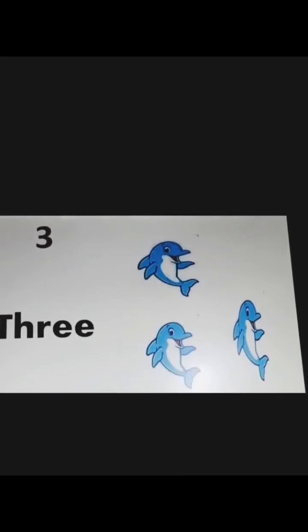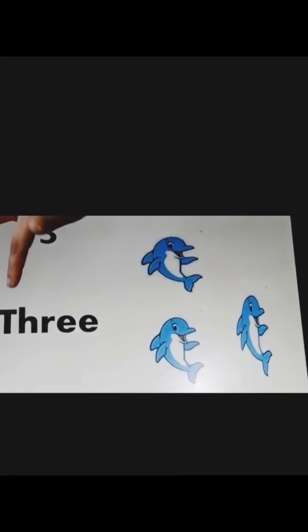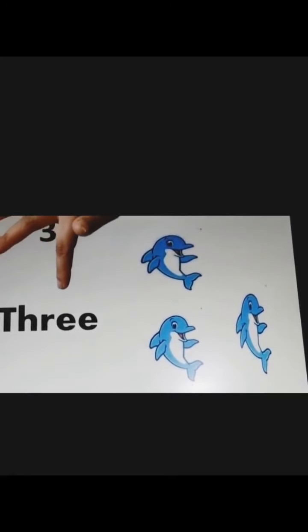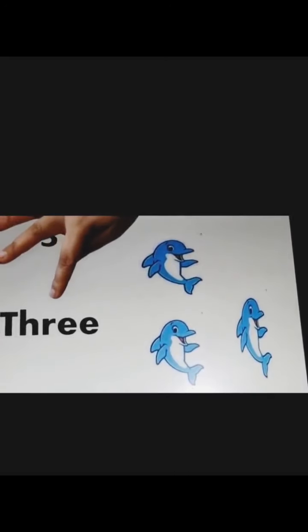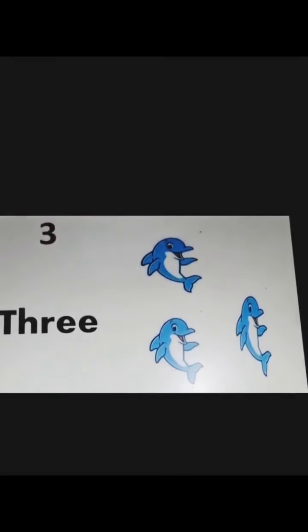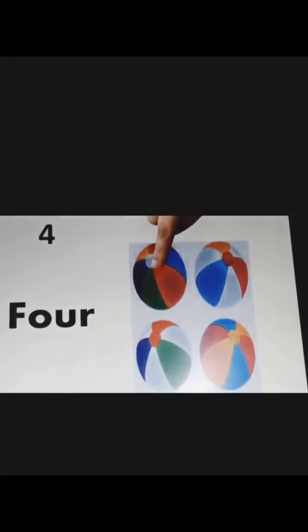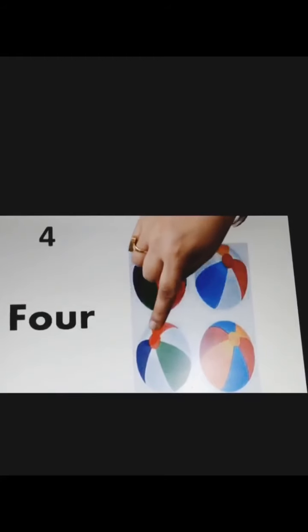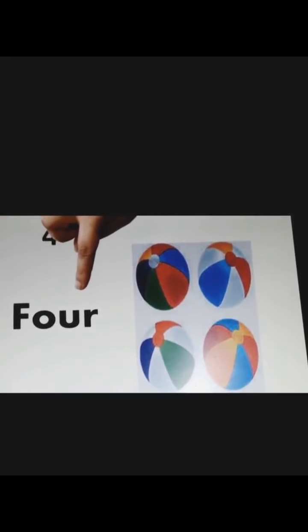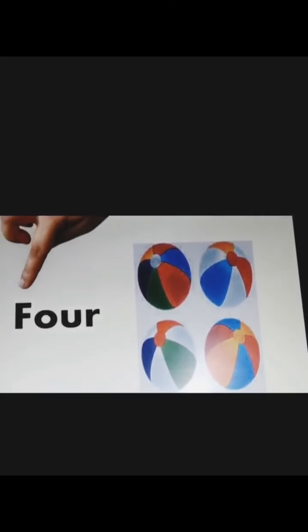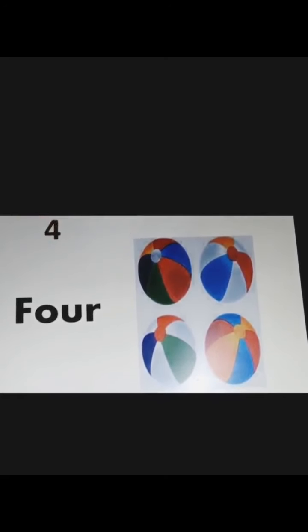3, 3 dolphins, 1 2 3, T H R E E 3, T H R E E 3. 4, 4 balls, 1 2 3 4. Now, the spelling. F O U R 4, F O U R 4.